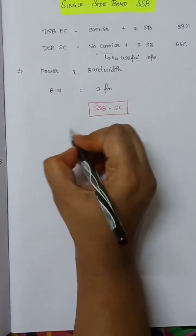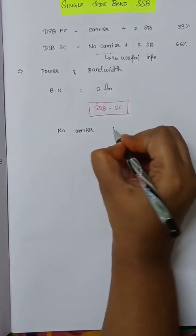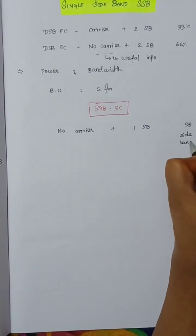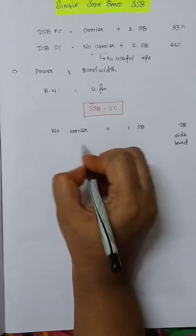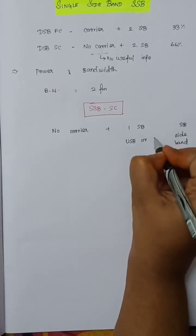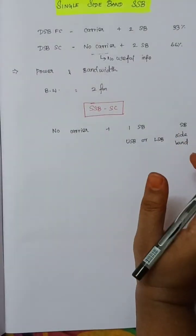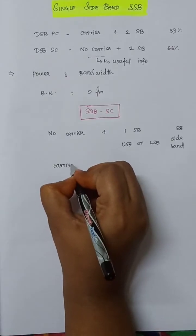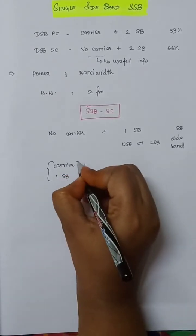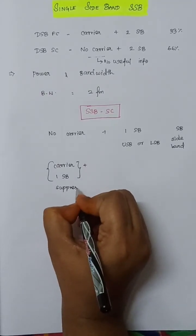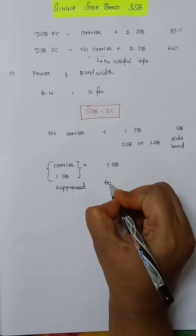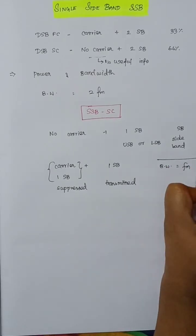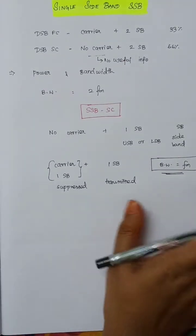In SSB, the carrier wave is suppressed and only one sideband is transmitted — either the Upper Sideband or Lower Sideband, since both contain the same set of information. This gives SSB the minimum bandwidth of FM, making it the minimum bandwidth modulation technique.